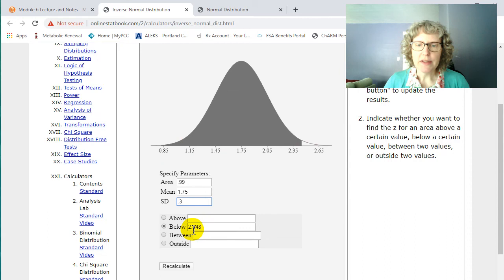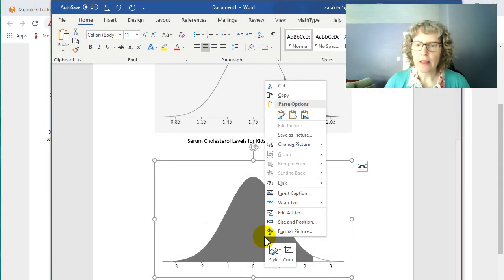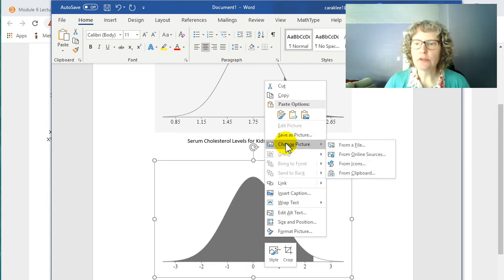I've got my right scale and it's 2.448 milligrams per milliliter. So I'll copy that. Can I paste right over it? Change picture. No, that's too... it's not worth it.